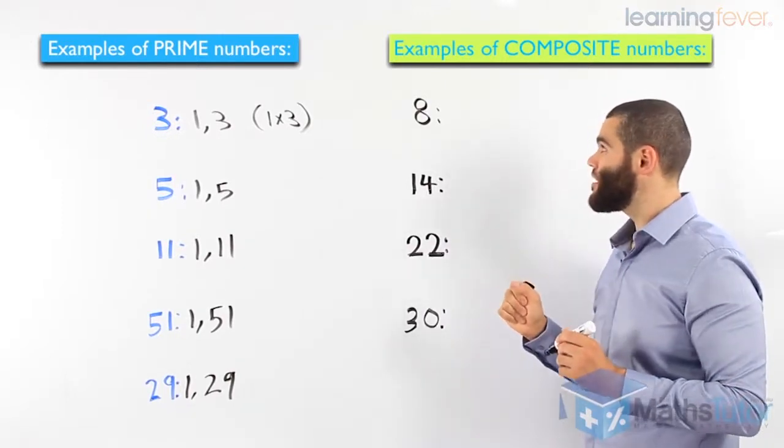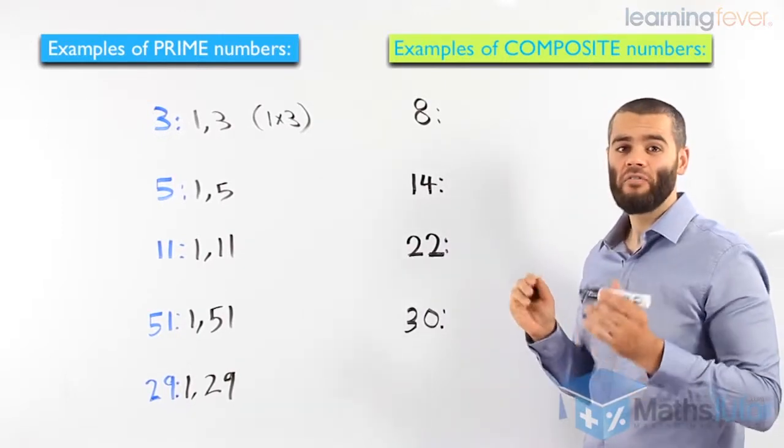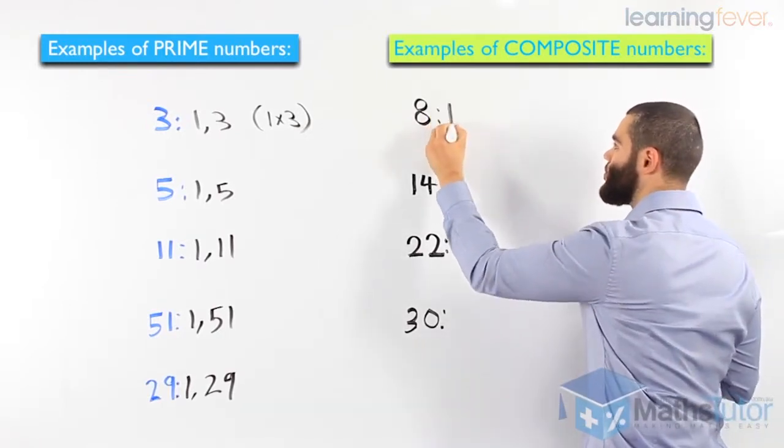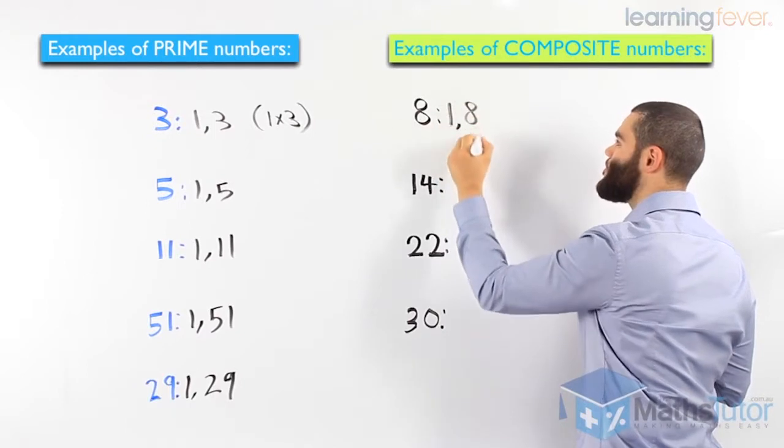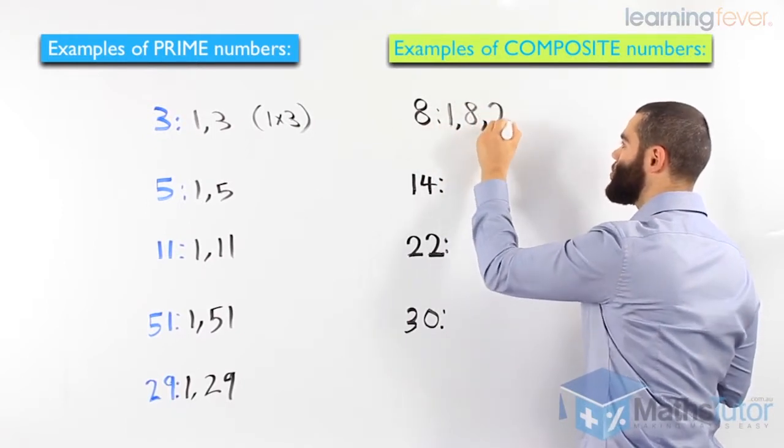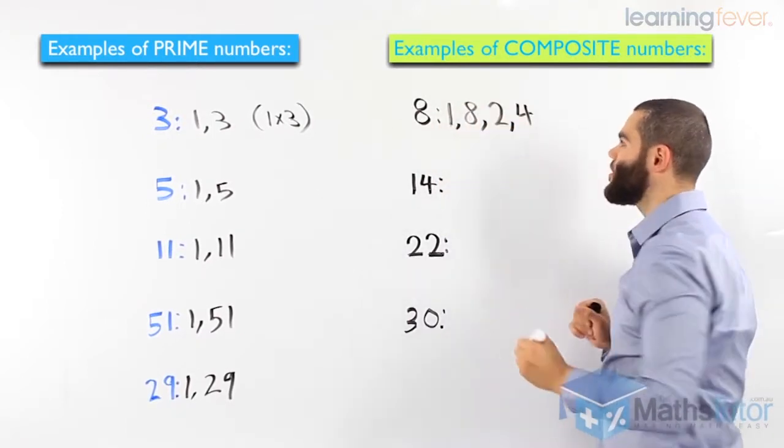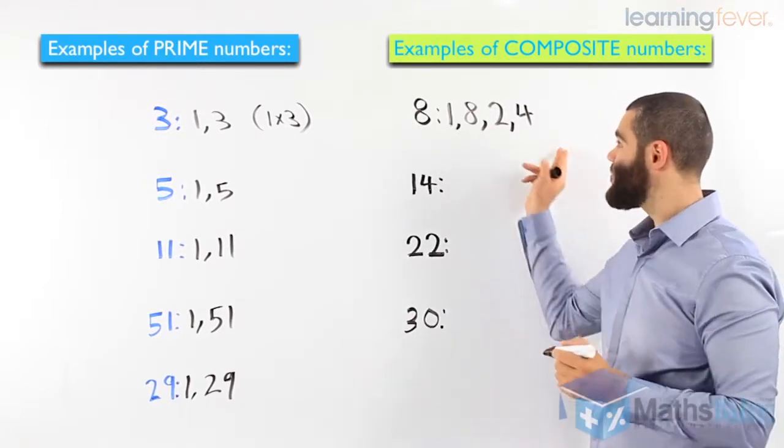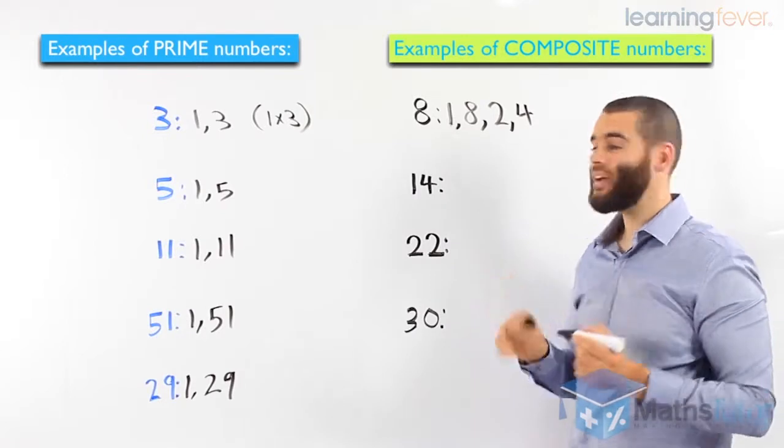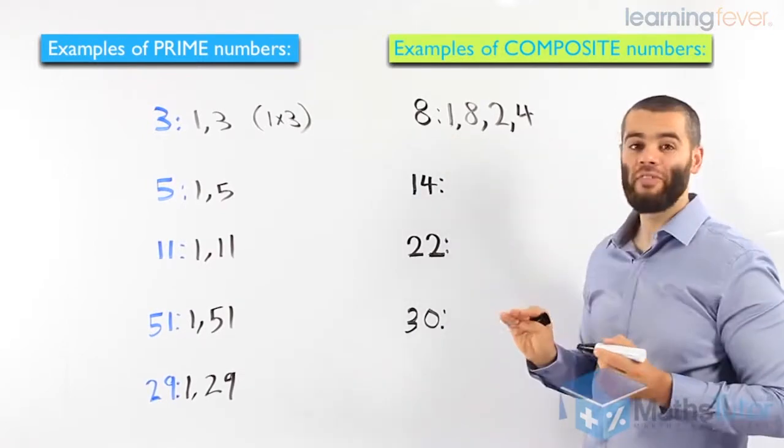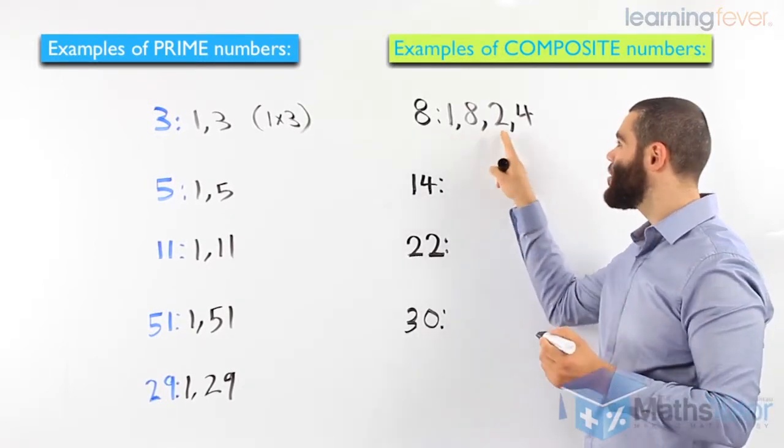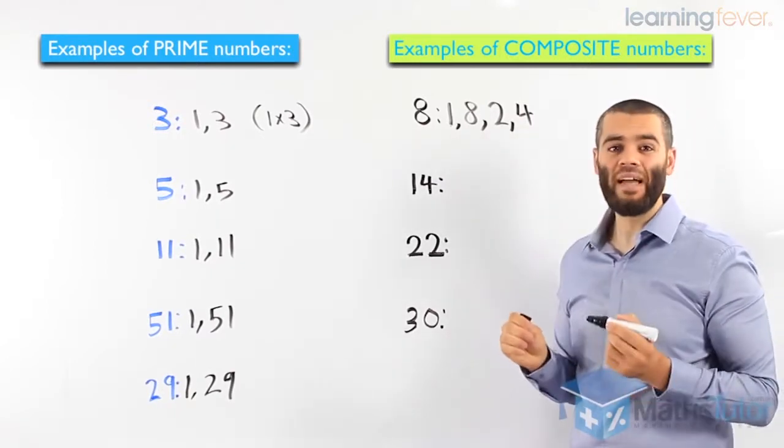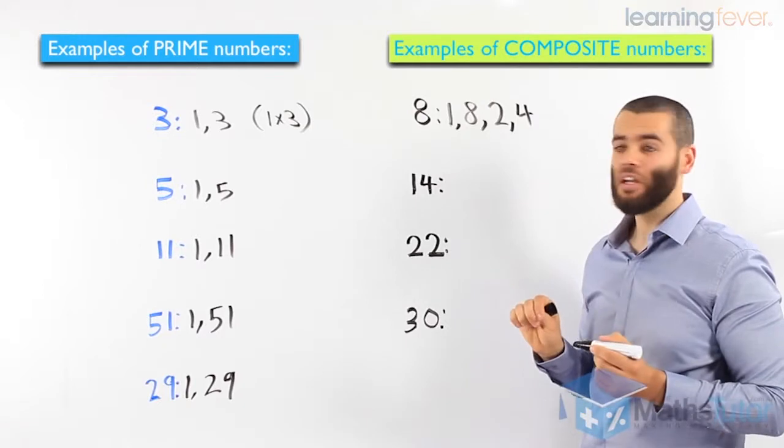So the composite, let's see 8 and find the factors of 8. We know 1 times 8 is 8. 2 times 4 is also 8. So as you can see here, we have more than 2 factors. We have 4 factors. Therefore, because it has more than 2 factors, it is a composite number.